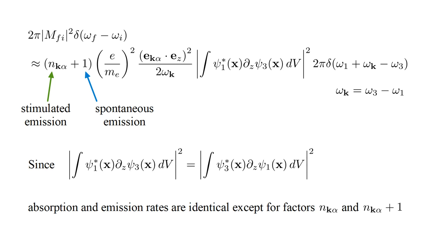We have established that the absorption and emission rates between the hydrogen 1s and 2Pz orbitals are identical, except for a factor N-k-alpha for absorption and N-k-alpha plus one for emission. In the first video of this series, we discussed Einstein's 1917 prediction of stimulated emission in terms of A and B coefficients. Let's revisit this topic in light of our current results.